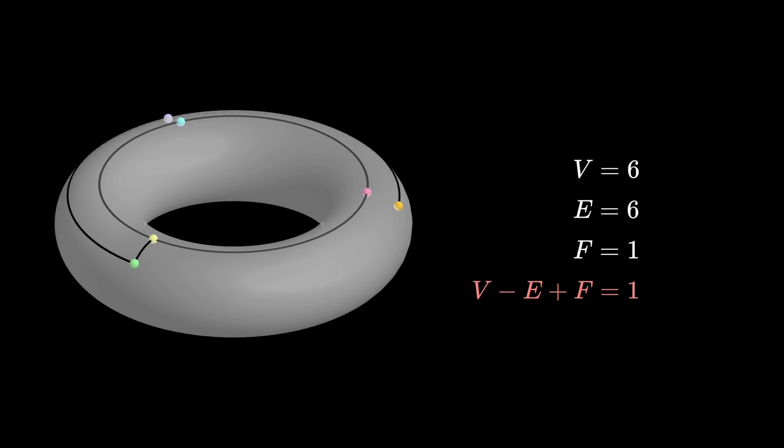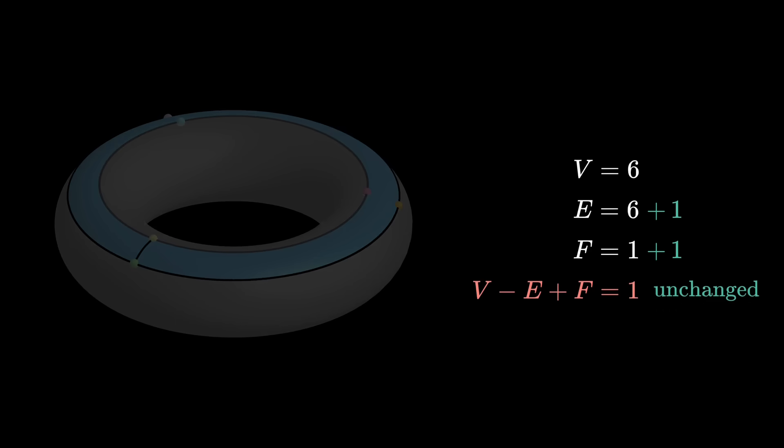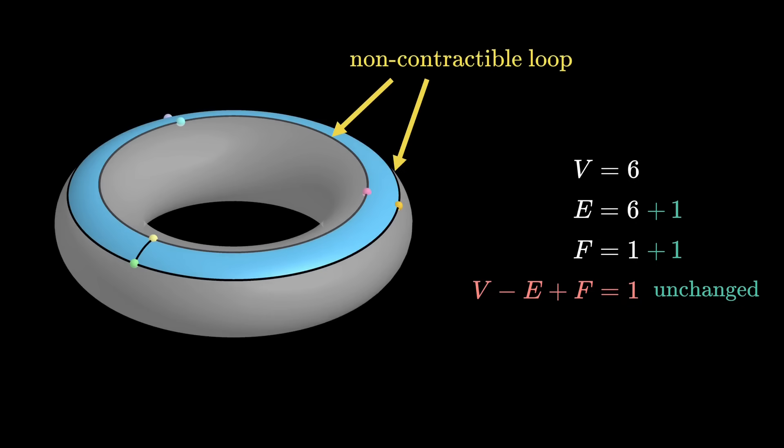If we now complete the lower loop, then E will increase by 1 because we have added an edge, but actually, F will also increase by 1. This is because closing the lower loop genuinely creates a new region. If you are stuck inside the strip, you can't go outside without passing through the edges, so with both E and F increasing by 1, V minus E plus F remains unchanged. So even if you have an extra, non-contractable loop, you can't decrease the value of V minus E plus F by more than 1.